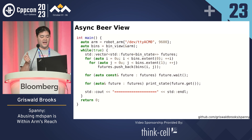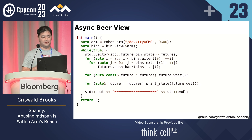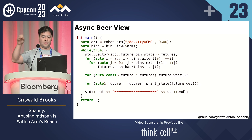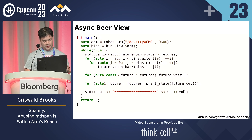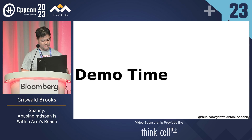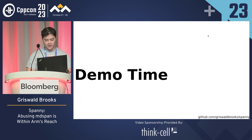So with that, it allows me to connect to the robot arm, create a view for my beer, tell the robot to go check all the beer bins. And then, once it's done, I print out the state of my beer. This is very important.